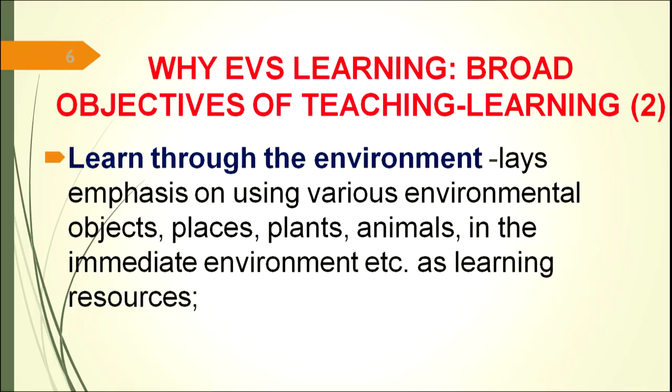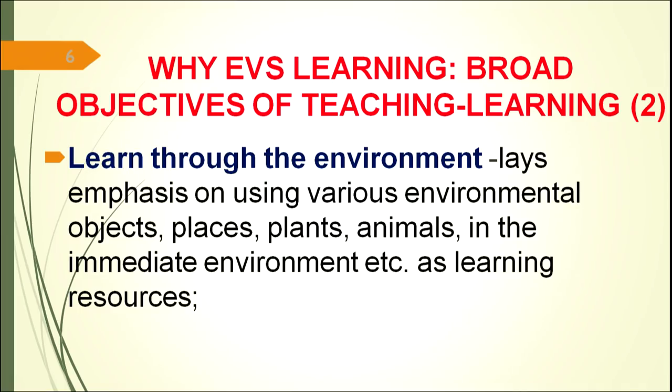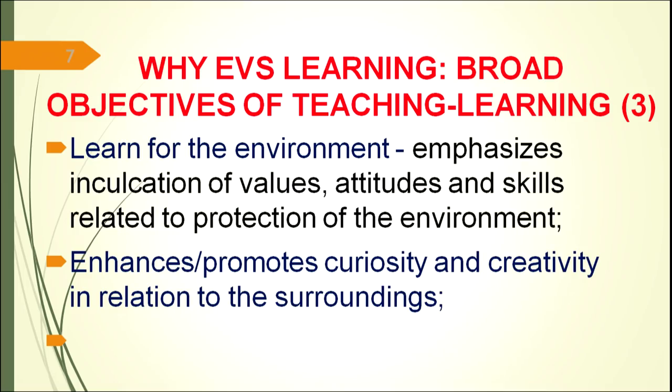The second important objective of EVS learning is learning through the environment. EVS learning should be through the environment, so the learning resource and material should come from the environment. This lays emphasis on using various environmental objects, places as learning material and learning resources — like various monuments, various types of buildings in the vicinity, plants and animals in the immediate surrounding — rather than using pictures from textbooks.